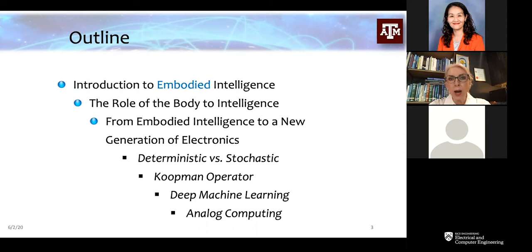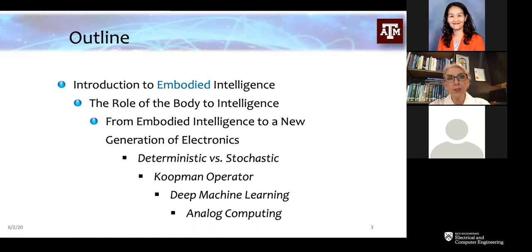I will talk about the importance of the body to intelligence — there is always a body to every wireless system. The body could be a robotic system, or just a phone that has different types of sensors including biomedical sensors, a camera, and so forth. Or you may have a satellite that has an electronic sensor, optical sensors, or other systems with sensors for the environment. All of this is the body, and I'd like to talk about how that impacts the intelligence and how it can be utilized to develop that intelligence.